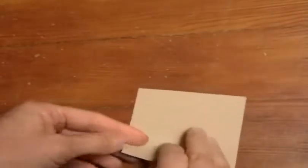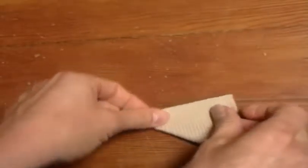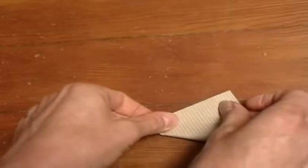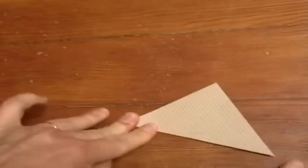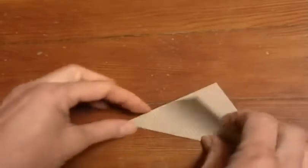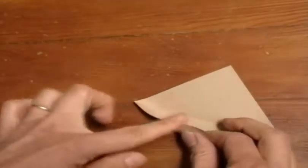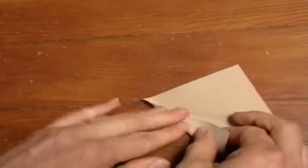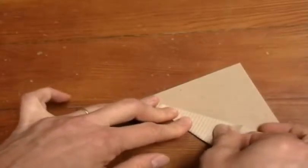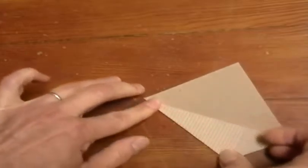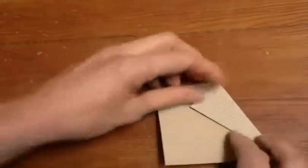So with the wrong side facing you, you want to fold it in half along the diagonal, like that. Then unfold it, and then this edge and this edge you fold into that fold crease, like that.